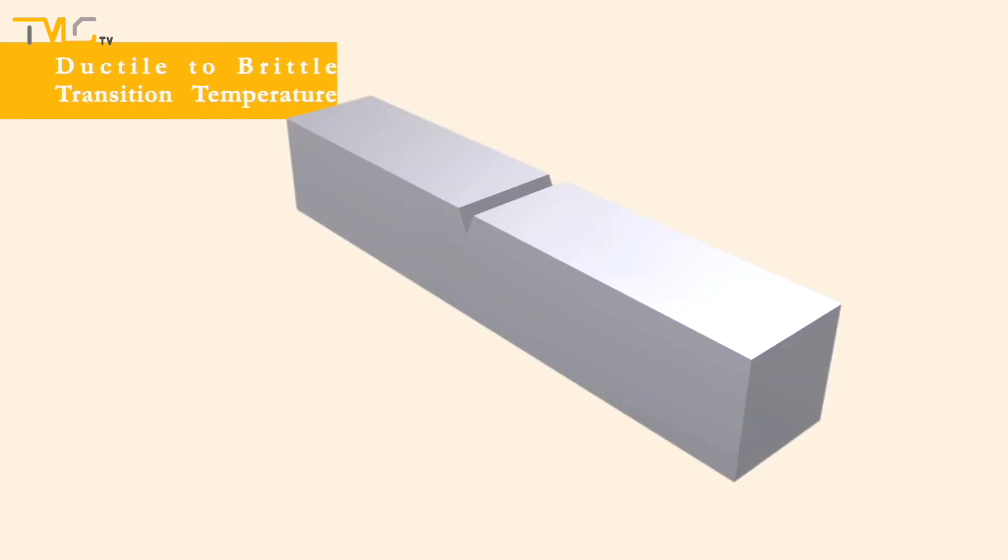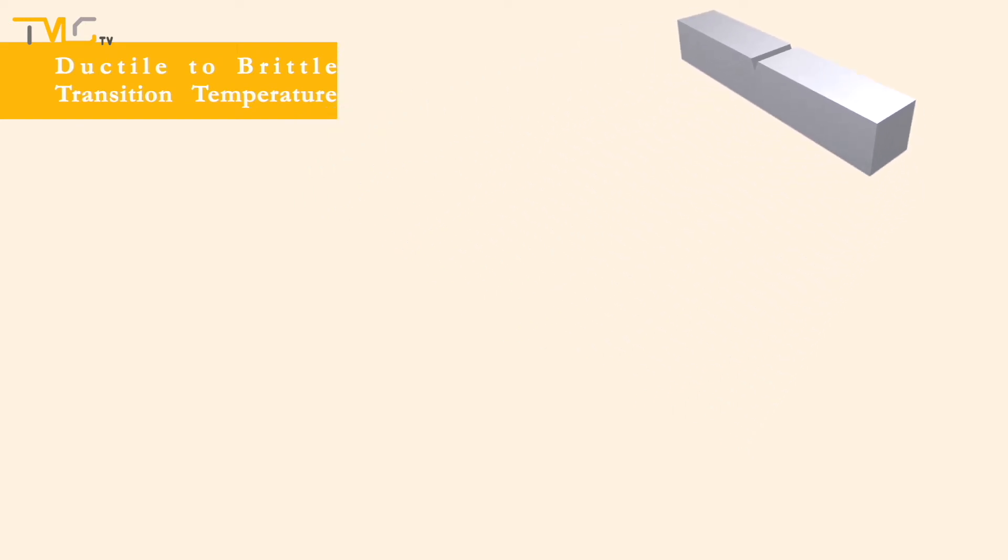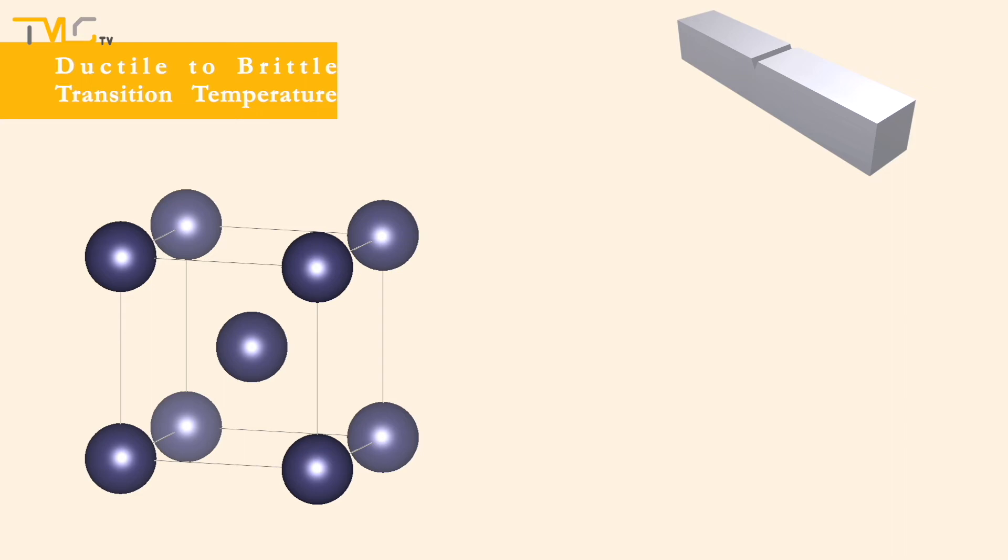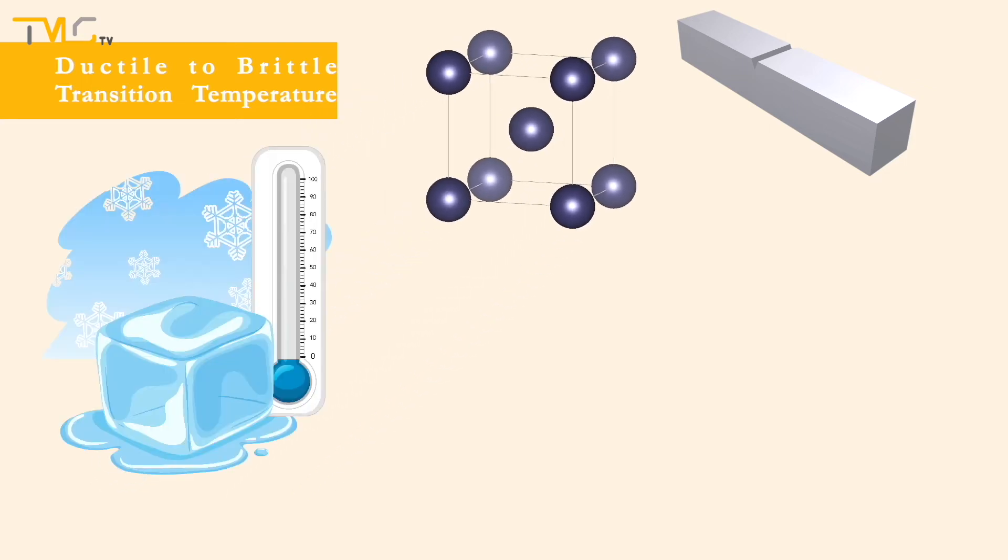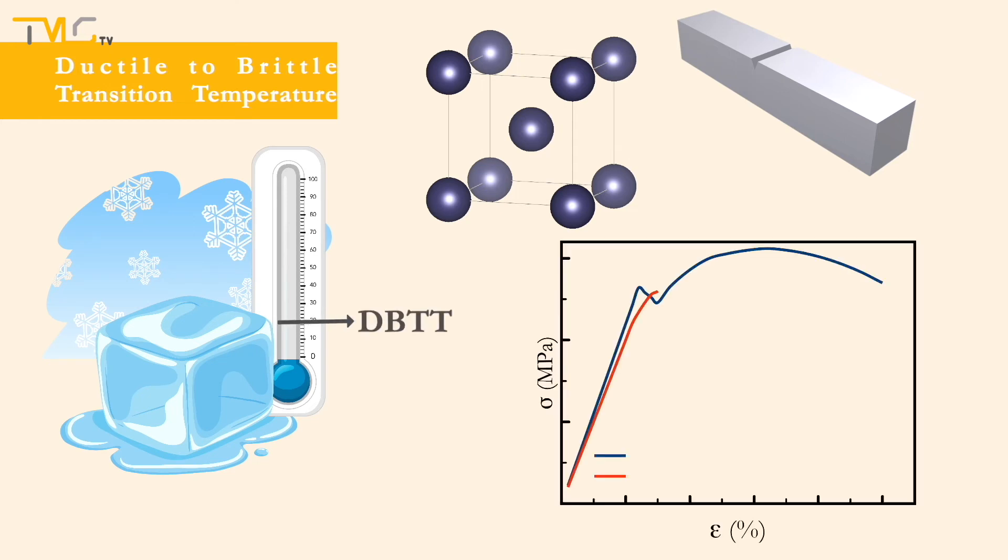Charpy and Izod tests become very useful for determining whether a material has a ductile-to-brittle transition temperature or not. Ductile-to-brittle transition is a phenomenon observed for metals with BCC structure. As such materials are cooled below a specific temperature, which is called the ductile-to-brittle transition temperature, their mechanical behavior changes from a ductile one to a brittle one.